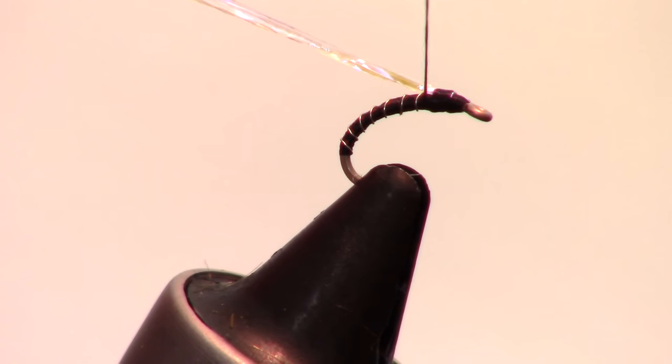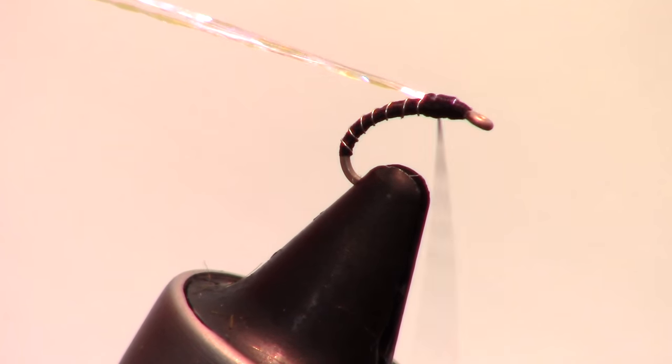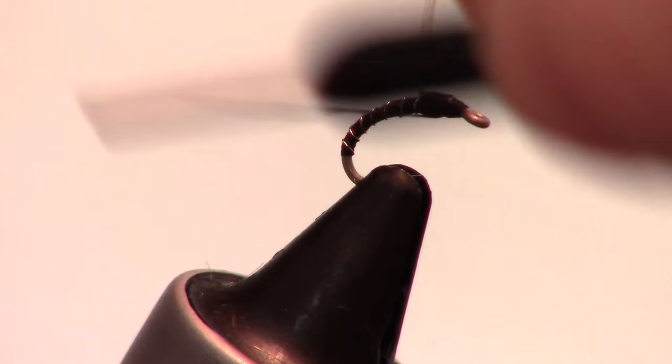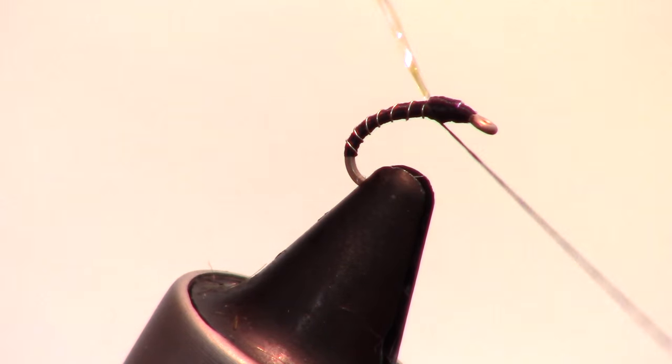Wrap in front of the flash to build a small head on the fly. Then you can wrap behind the Crystal Flash in order to stand up the flash just a bit.